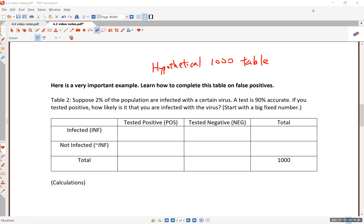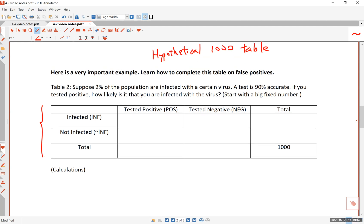Okay, so page two of section 4.2. This is a table called the hypothetical thousand table. We start with a group of a thousand fictitious people and assume that 2% of the population are infected with a certain virus.